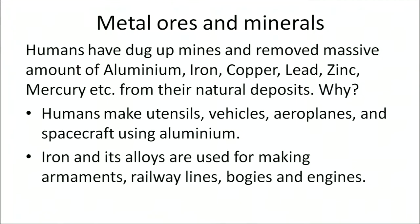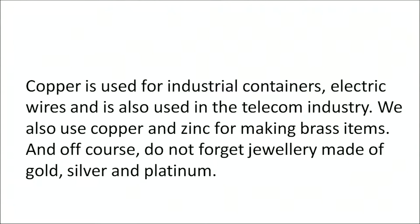Metal ores are chemical compounds of metal found as deposits in the earth. Earth has a storehouse of many minerals and metals. Humans have dug up mines and removed massive amounts of aluminium, iron, copper, lead, zinc, mercury, etc. from their natural deposits. Humans make utensils, vehicles, aeroplanes, and spacecraft using aluminium. Iron and its alloys are used for making armaments, railway lines, bogies, and engines. Copper is used for industrial containers, electric wires, and in the talcum industry. Copper and zinc are used for making brass items, and of course, jewellery is made of gold, silver, and platinum.